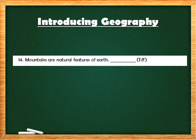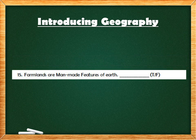Question 14: Mountains are natural features of the Earth — that is true, because no human can make mountains. Question 15: Farmlands are manmade features of the Earth. Farmlands are land used for farming, so it is manmade — that is also true.